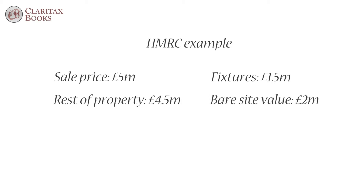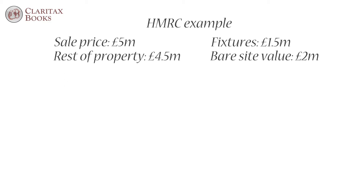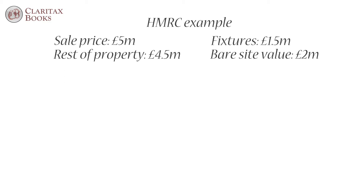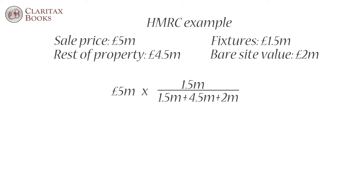Applying the formula, the apportioned value of the plant or machinery is calculated as follows: five million pounds × 1.5 million / (1.5 million + 4.5 million + 2 million), which gives us a figure of nine hundred and thirty seven thousand five hundred pounds.